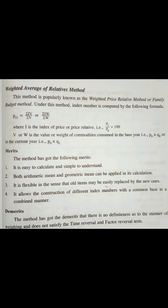Now let us see the demerits. The method has got the demerits that there is no definiteness as to the manner of weighing and does not satisfy the time reversal as well as factor reversal test. So we are not taking any weights and also both the time as well as factor reversal, which we call as the consistency test, are not satisfied here.